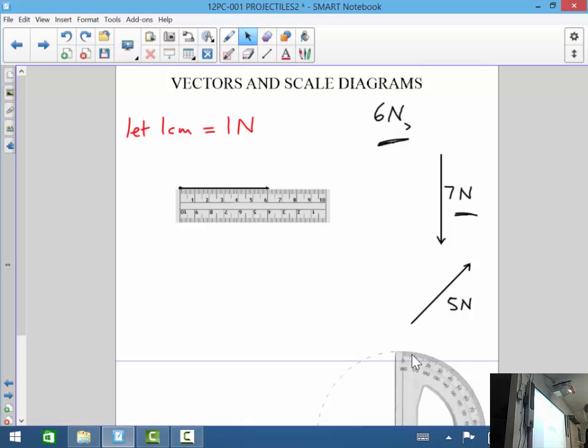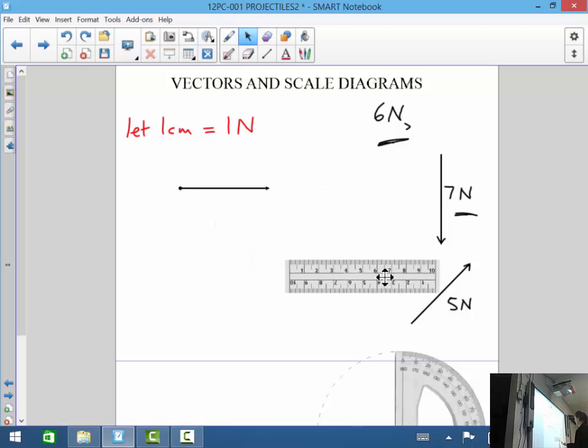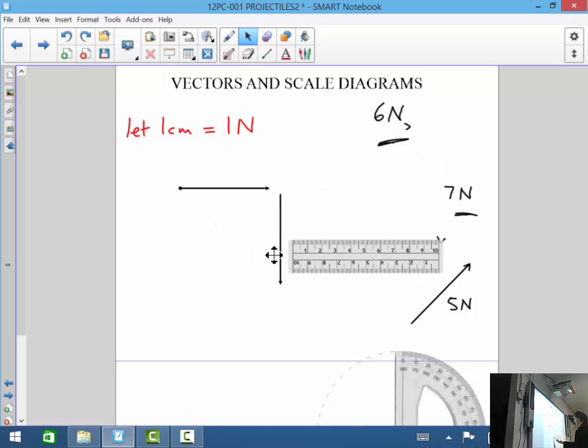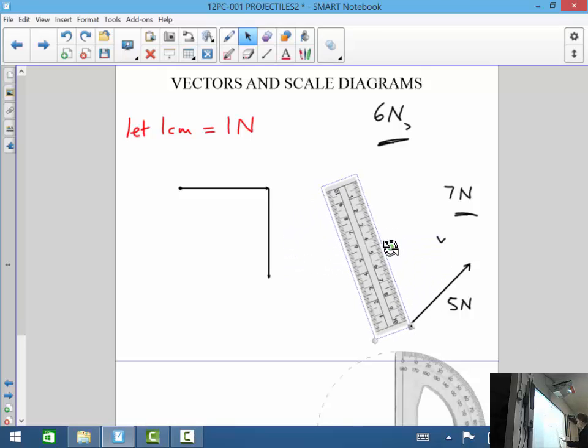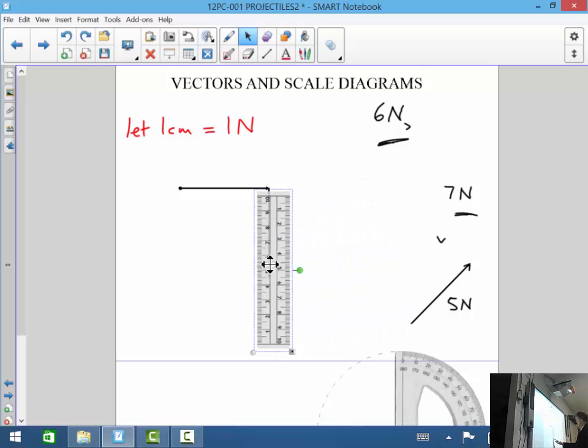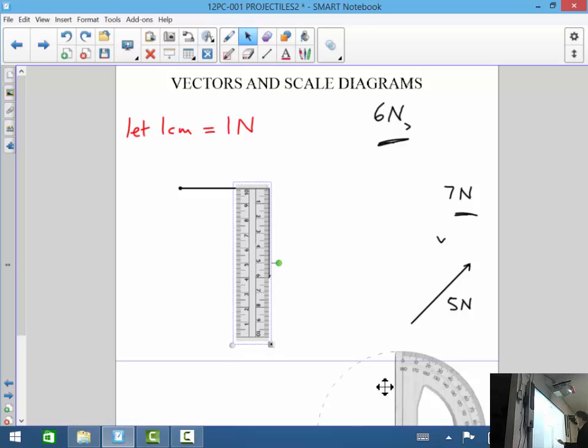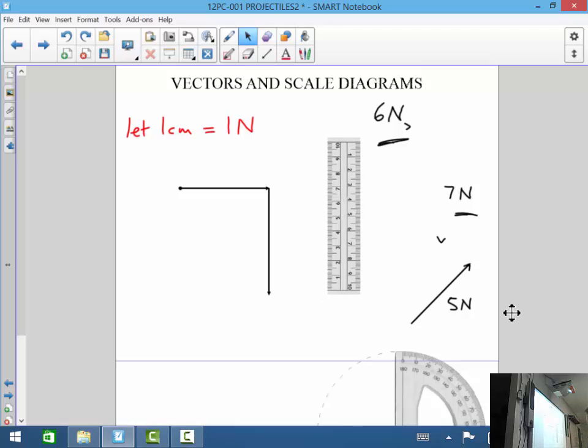Now at the end of that, you would then need to draw a 7 centimeter line to represent the 7 Newtons going down. You want to make sure this is 7 centimeters long. And in that case, if you rotate this around, you end up with the 7 there. Done pretty well.